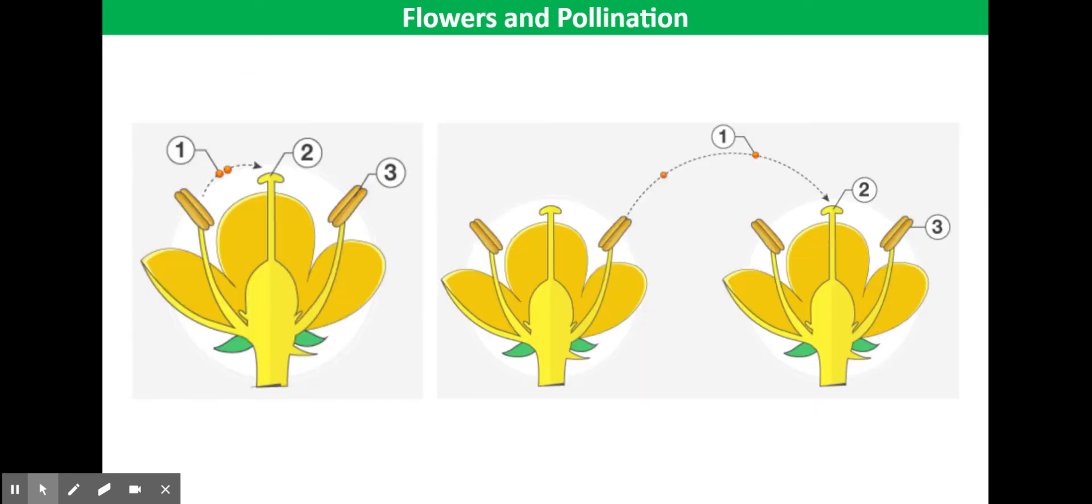Finally, I'm just going to mention self-pollination and cross-pollination. Self-pollination is when the pollen grains are transferred from the anther to the stigma of the same flower.